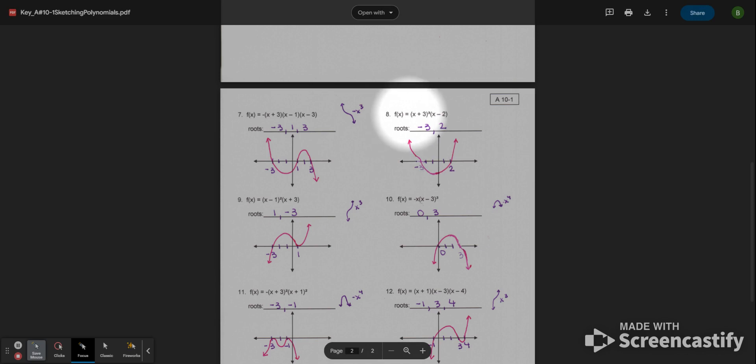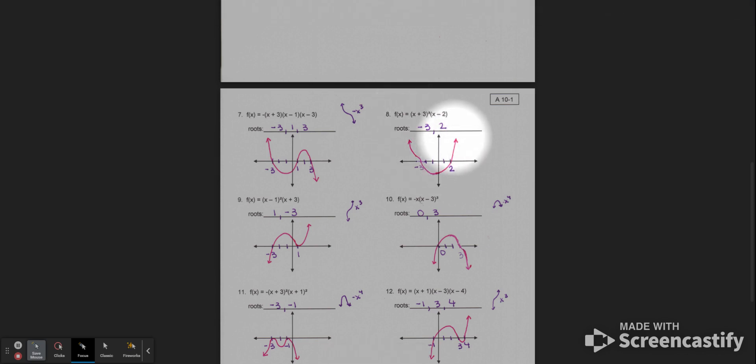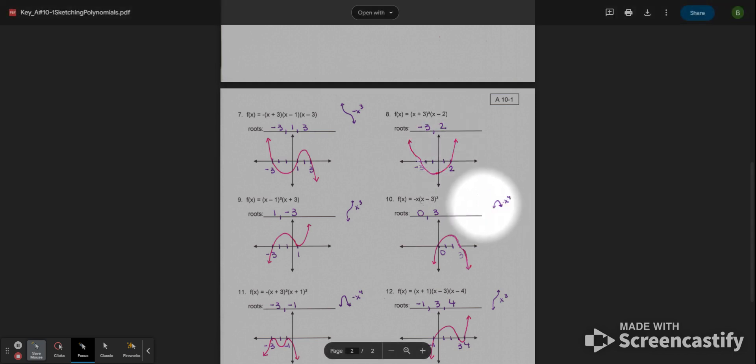And because it's positive on number 8, it's positive, so it opens upward. But you have to make sure that it goes through, and it has the shape of the cubic function right there at the negative 3 root. And then it goes through 2 right there and opening up in the end.